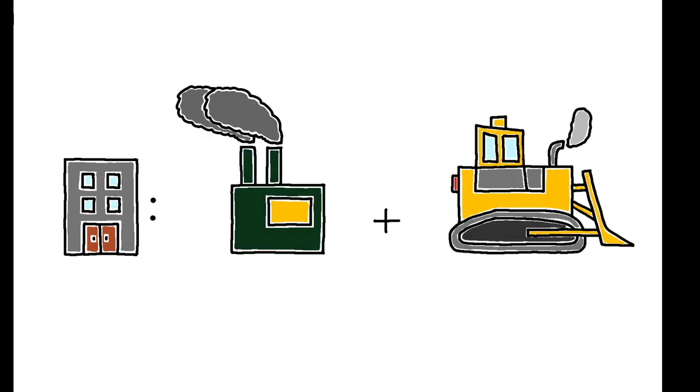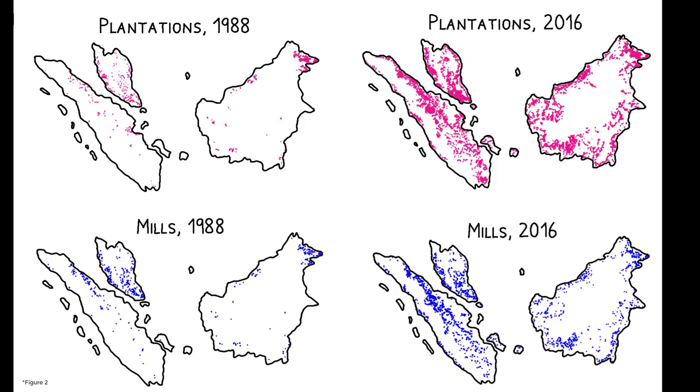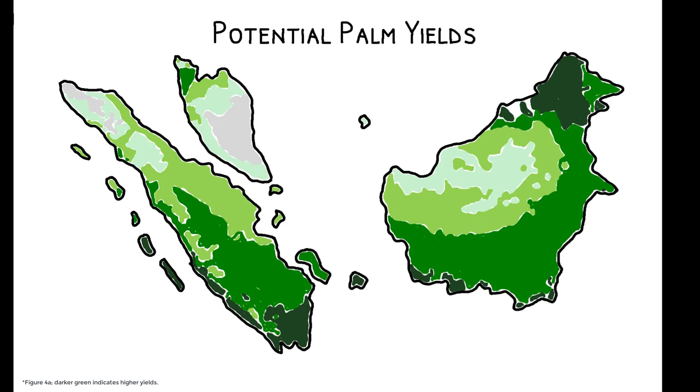On the supply side, firms invest in palm oil production by building mills and deforesting land to develop plantations. These decisions are modeled using data on actual patterns of development over the last several decades, as well as detailed geospatial data on characteristics such as yields.